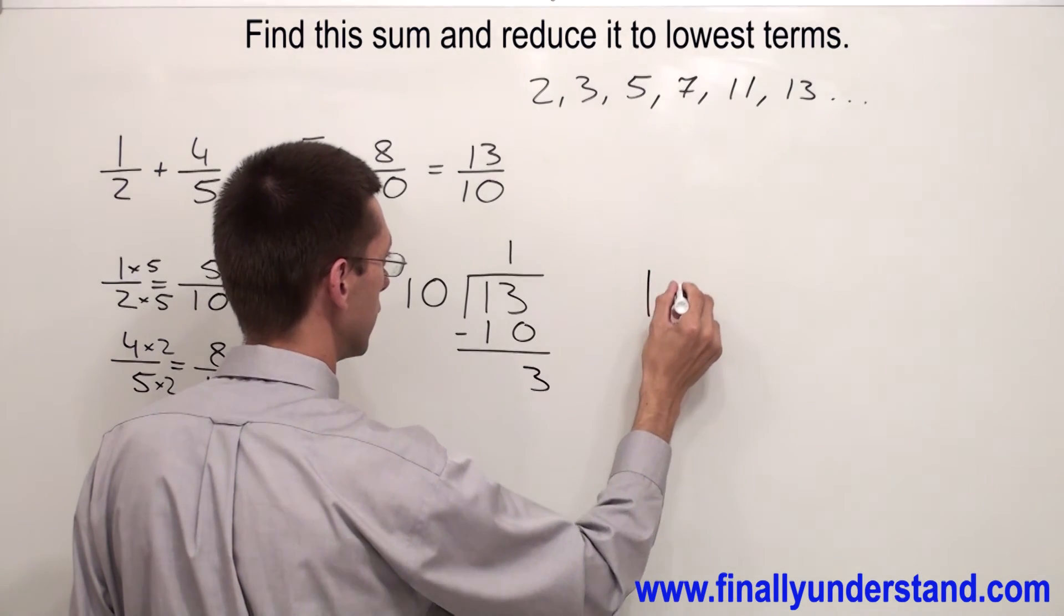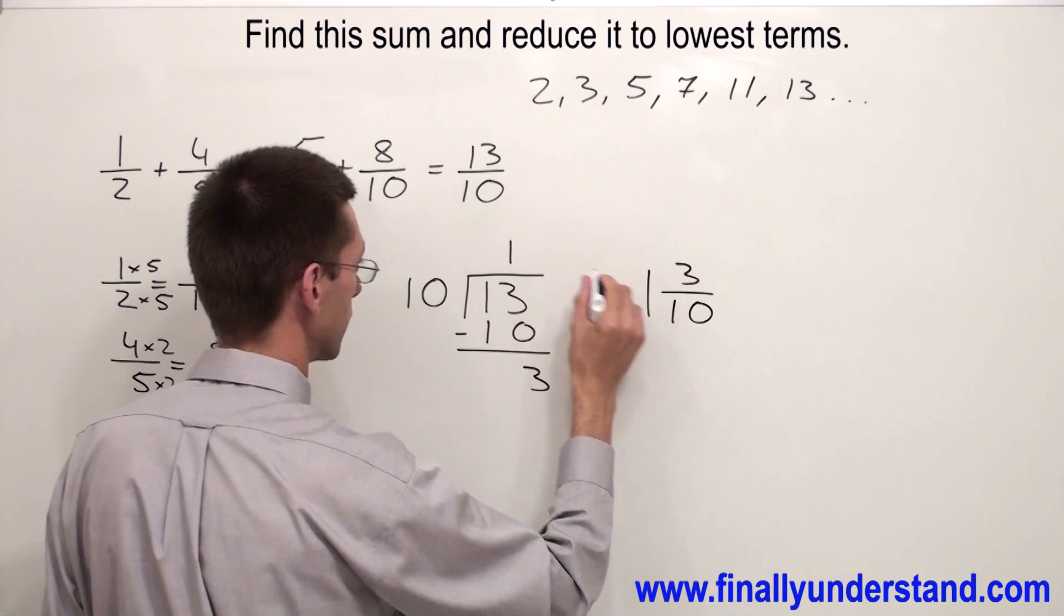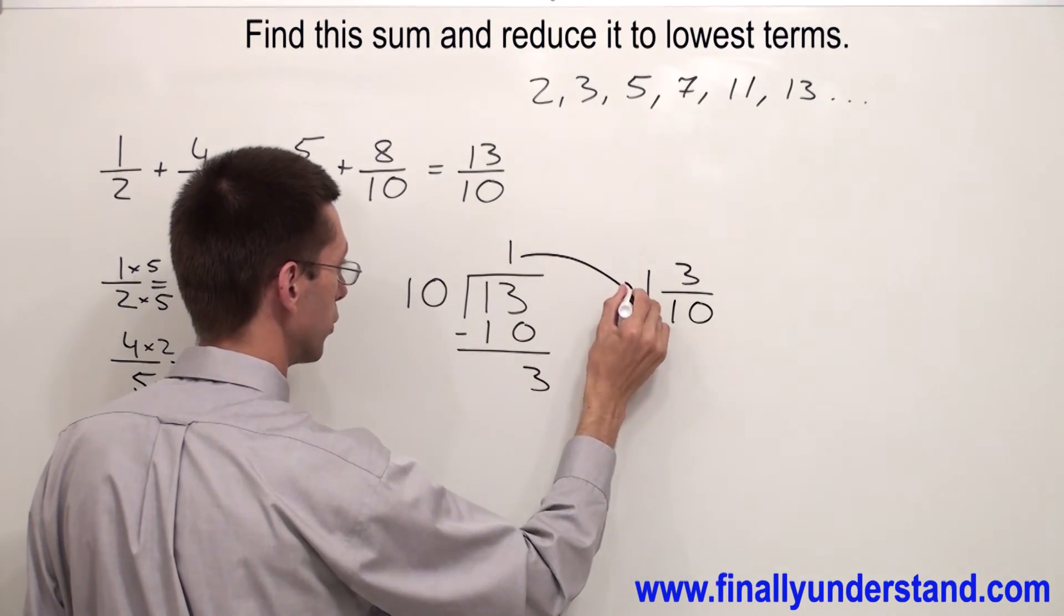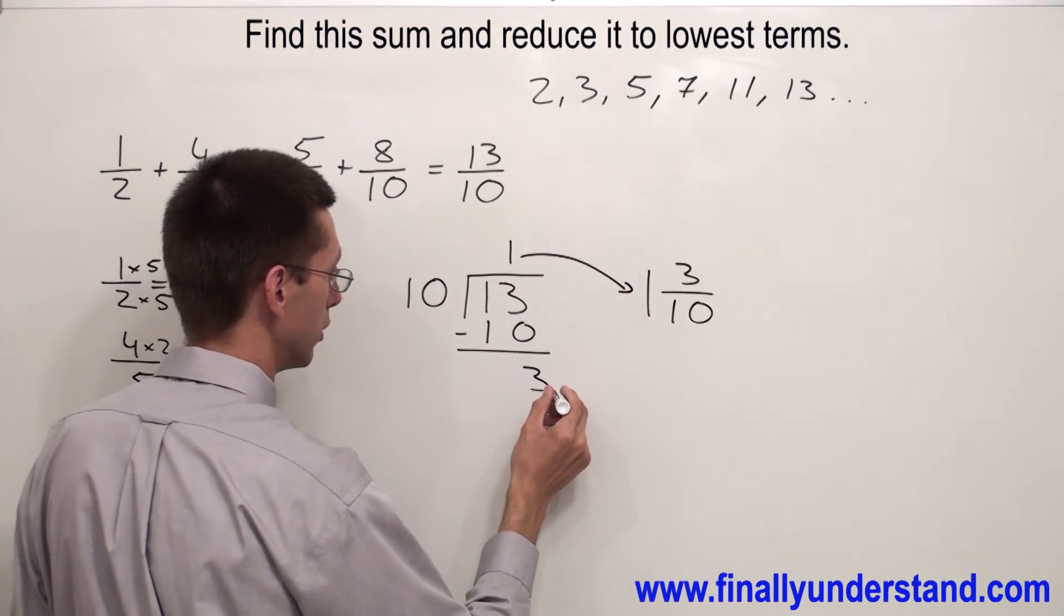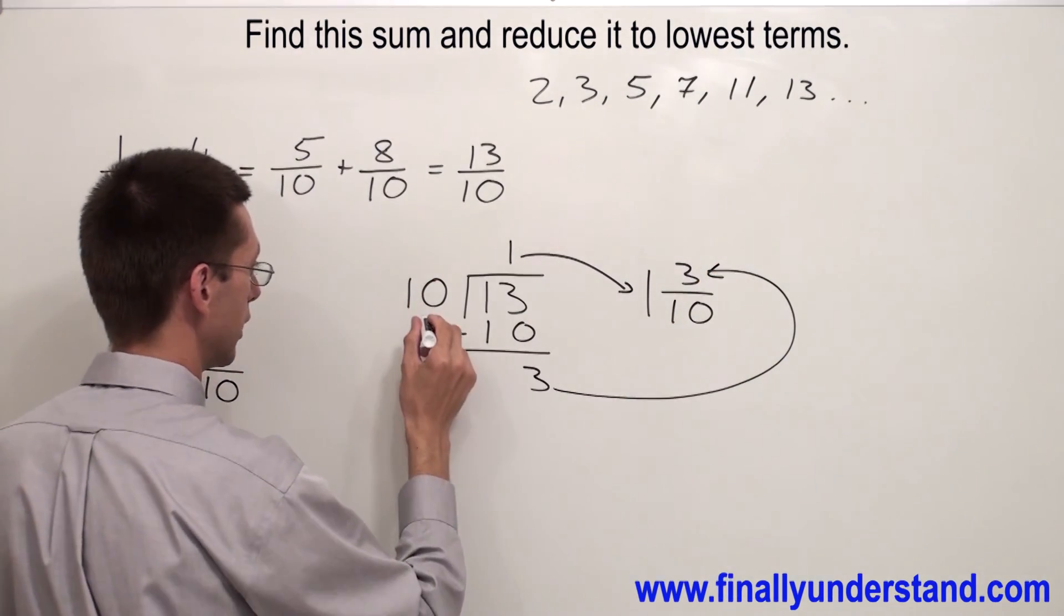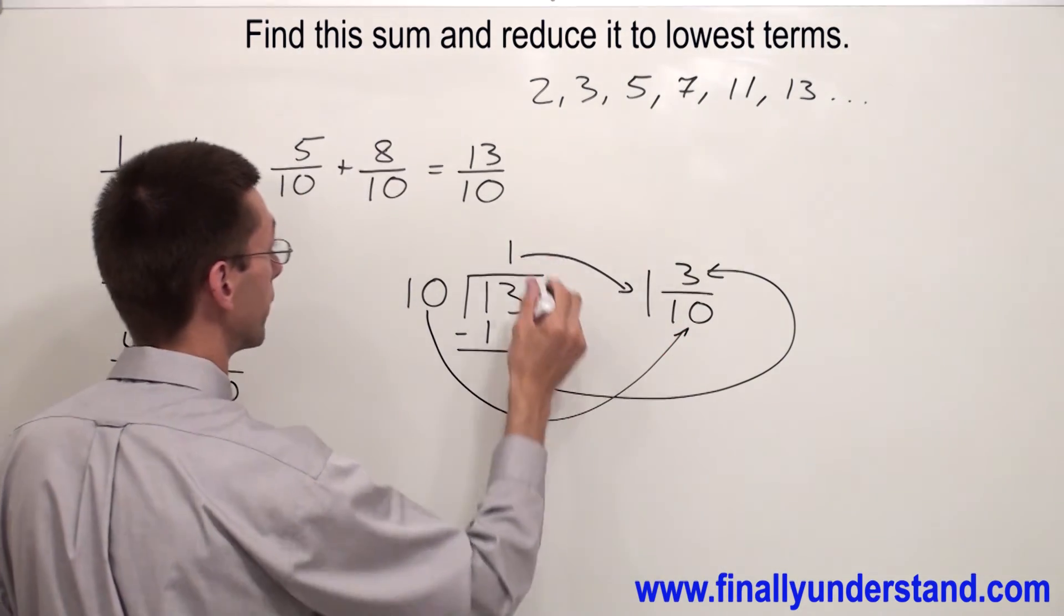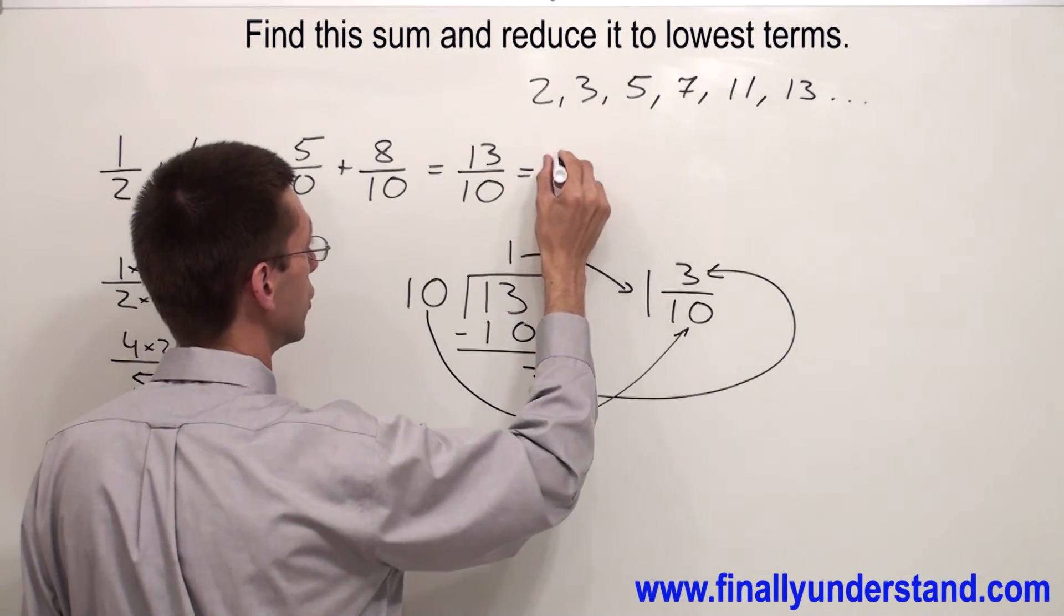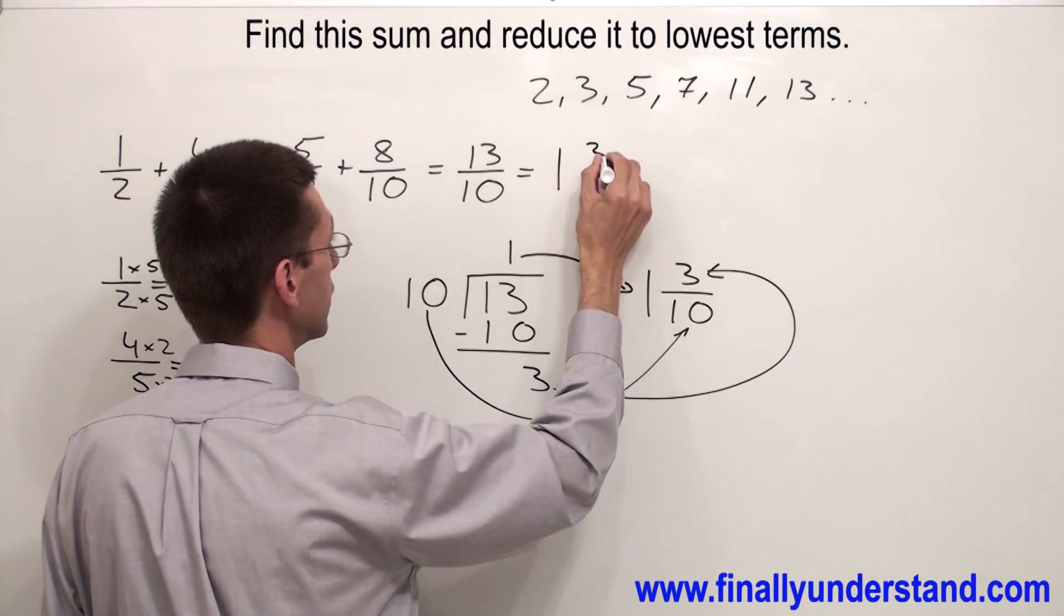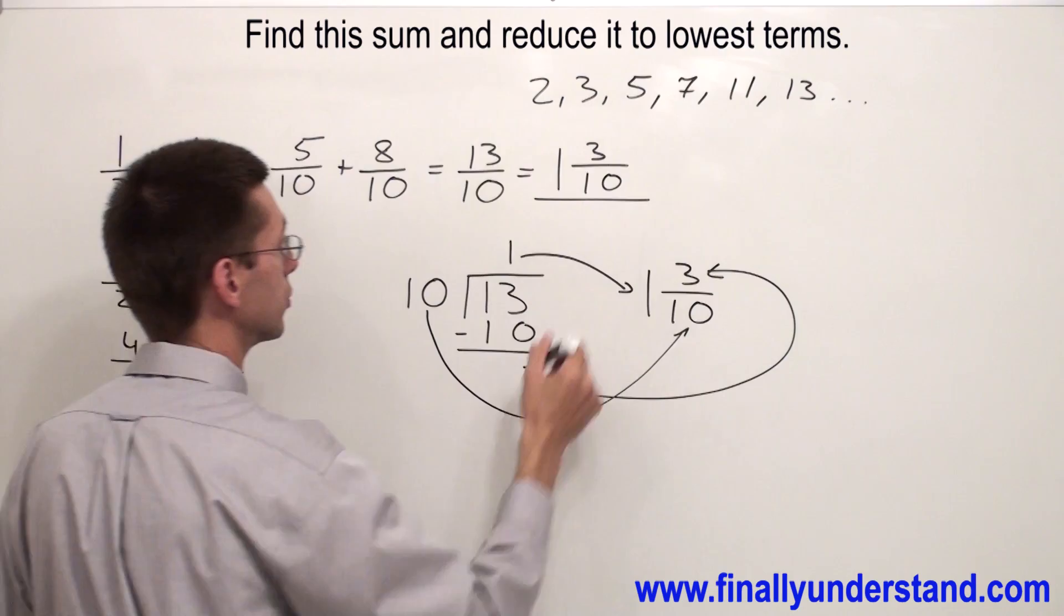My answer is 1 and 3 over 10. Where top number will go always to the front. Remainder will go to the numerator. And the divisor will go to the denominator. So my answer is 1 and 3 over 10. This is the solution.